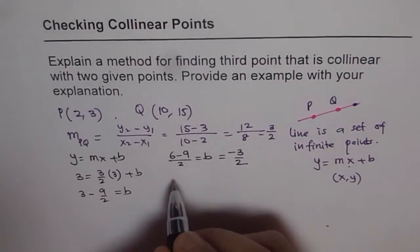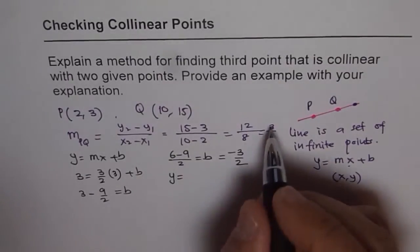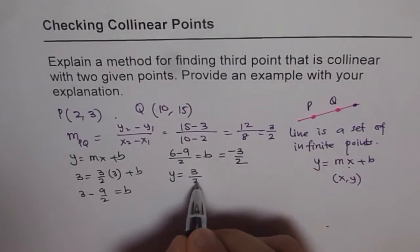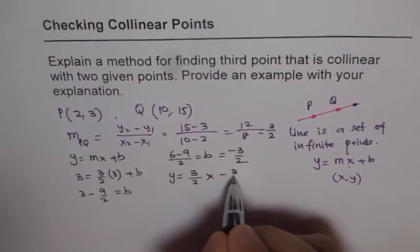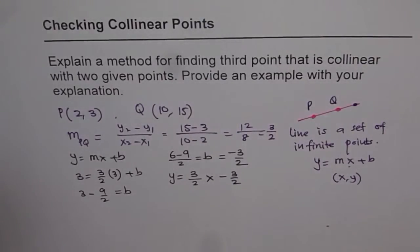Therefore, we get an equation which is Y equals 3 over 2 X minus 3 over 2. So that is the equation of our line.